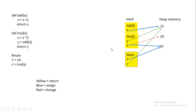When we call the multiply function, Python creates a new stack frame for it. In this multiply function, x is assigned to the value 10. Then x equals x times 2 — since integers are immutable, Python creates a new object 20 on the heap, and now this x references the new object 20 on the memory.